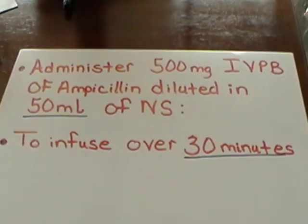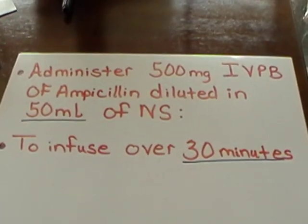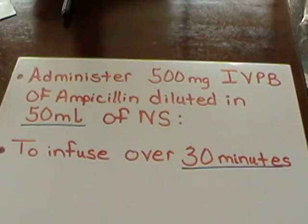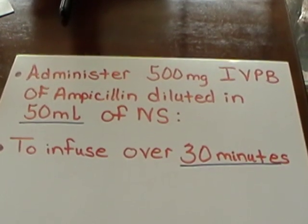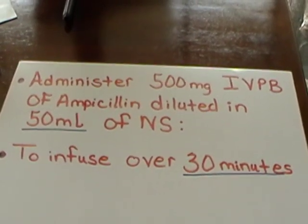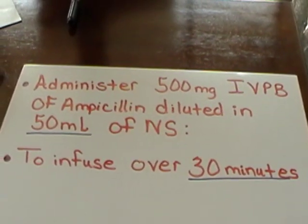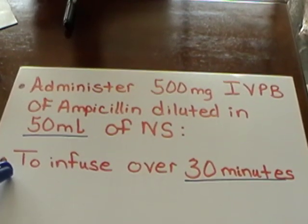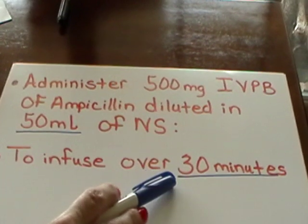Now we're going to work a different type of IV rate calculation. We're now administering an antibiotic. We have an order that reads, administer 500 milligrams of ampicillin IV piggyback in 50 milliliters of normal saline. We are to infuse this antibiotic over 30 minutes.